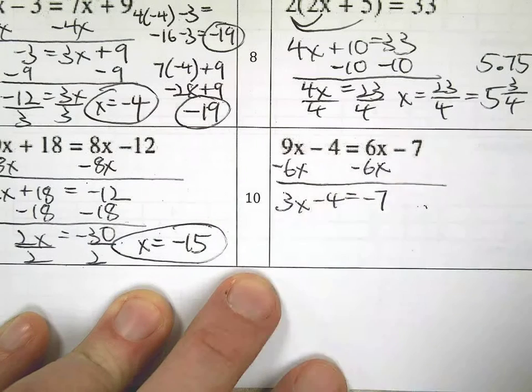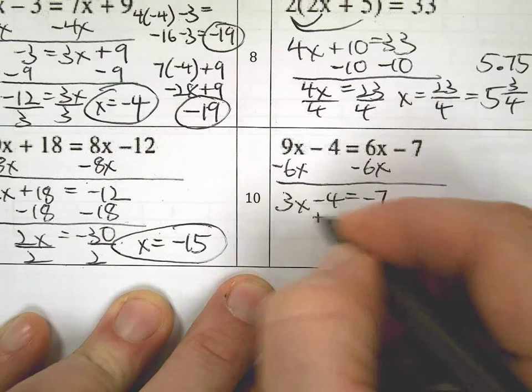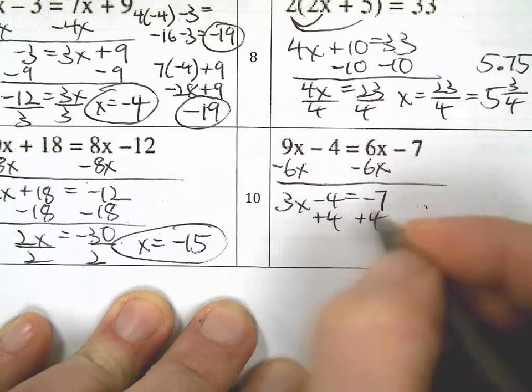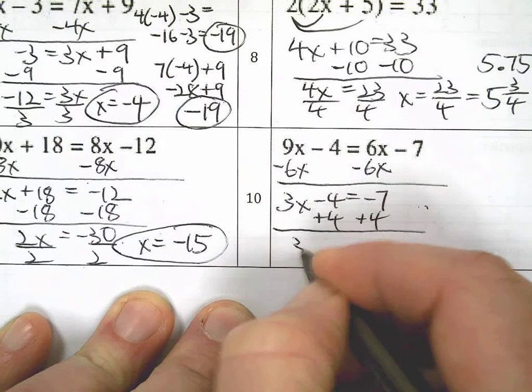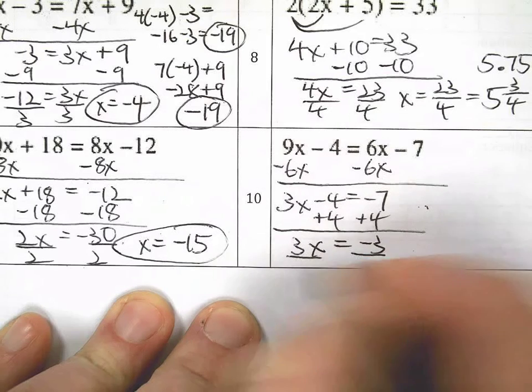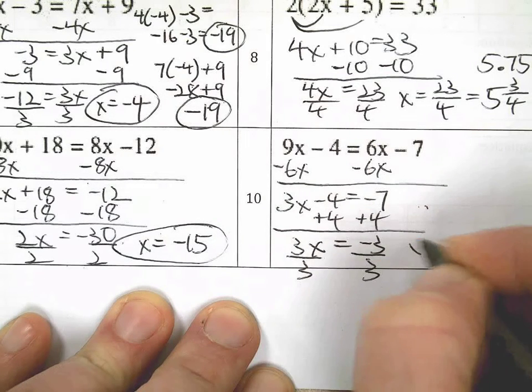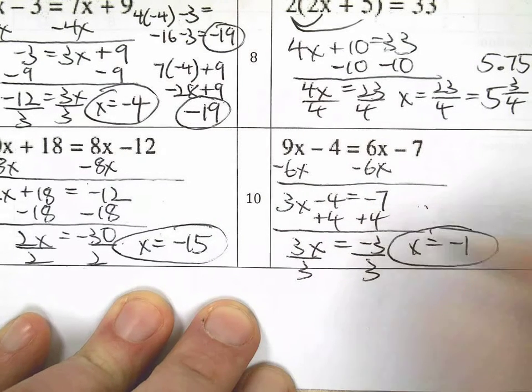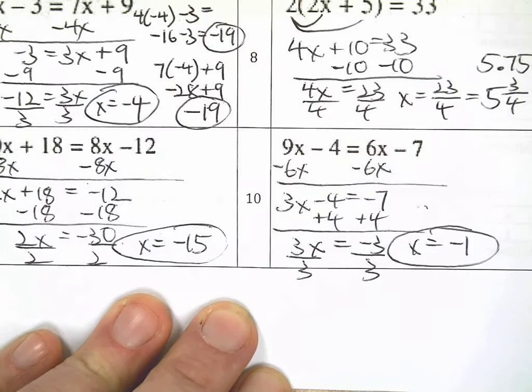3x minus 4 equals negative 7. This looks like it's going to be a fraction. Plus 4, plus 4. Oh, I'm wrong. It's not going to be a fraction. It's going to be the easiest one on the whole page. Divide by 3. x equals negative 1.